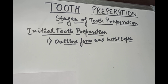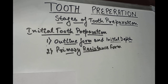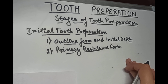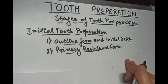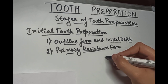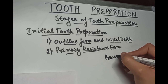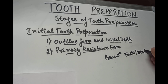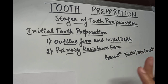The next stage of initial tooth preparation is the primary resistance form. It is the shape and placement of the preparation walls that best enable the restoration and the tooth to withstand without fracture the masticatory forces delivered along the long axis of the tooth. So the prevention of tooth or restoration fracture from occlusal forces is what we call the primary resistance form.